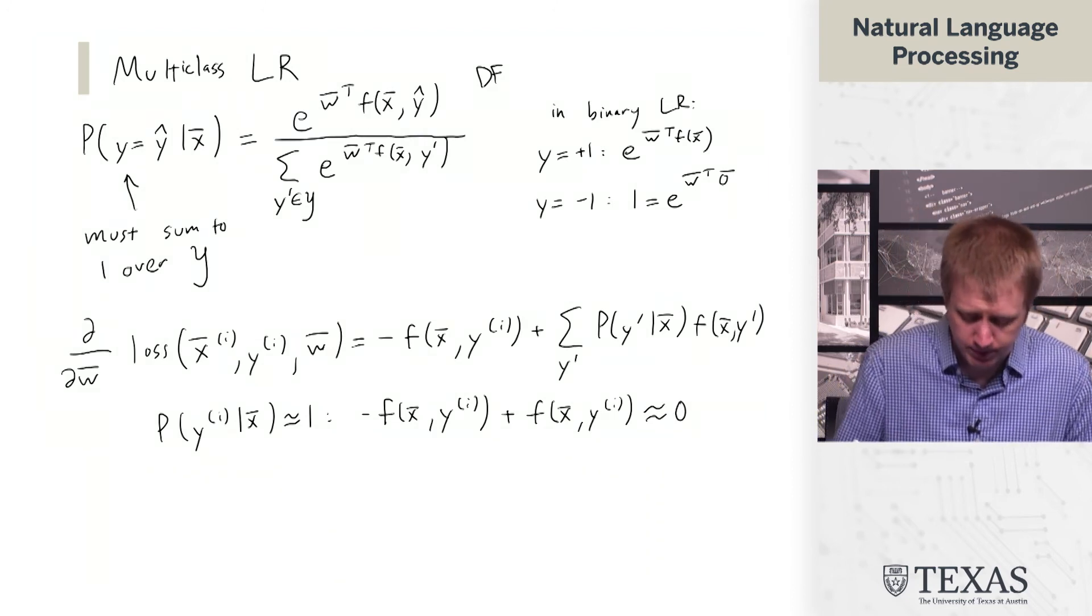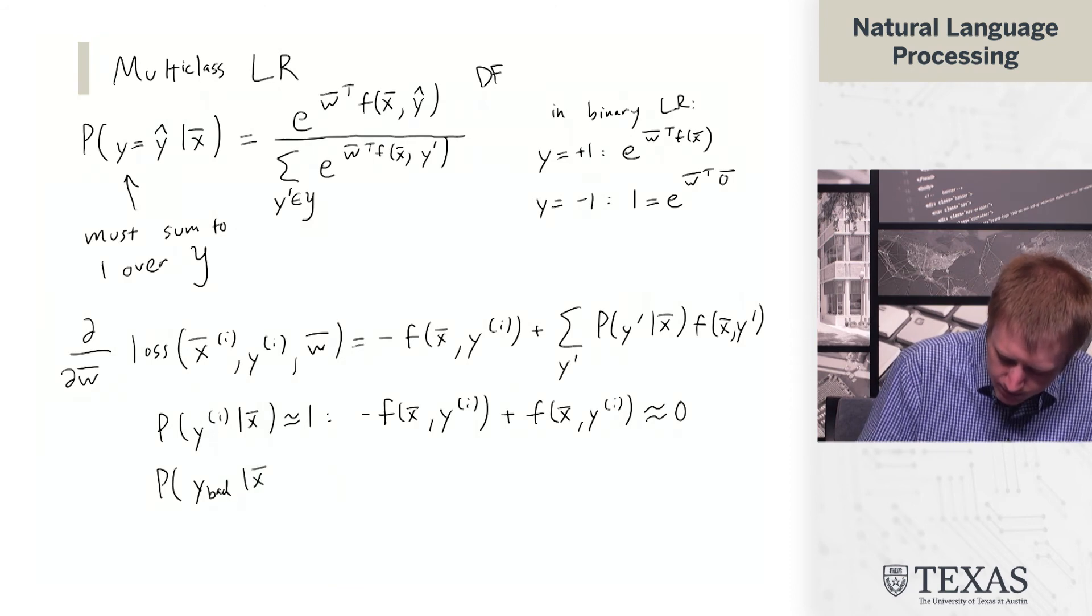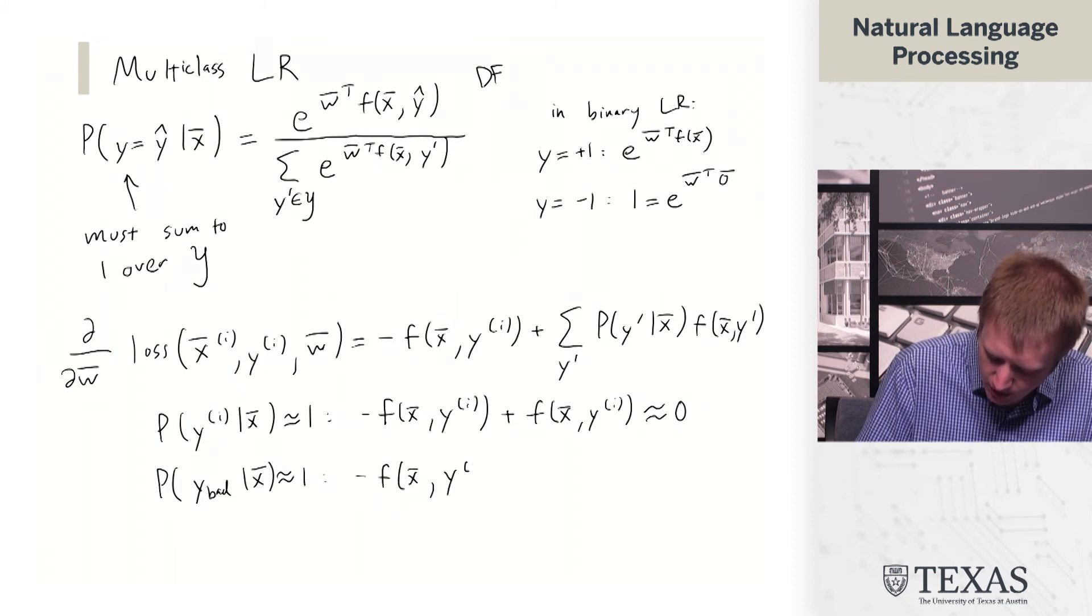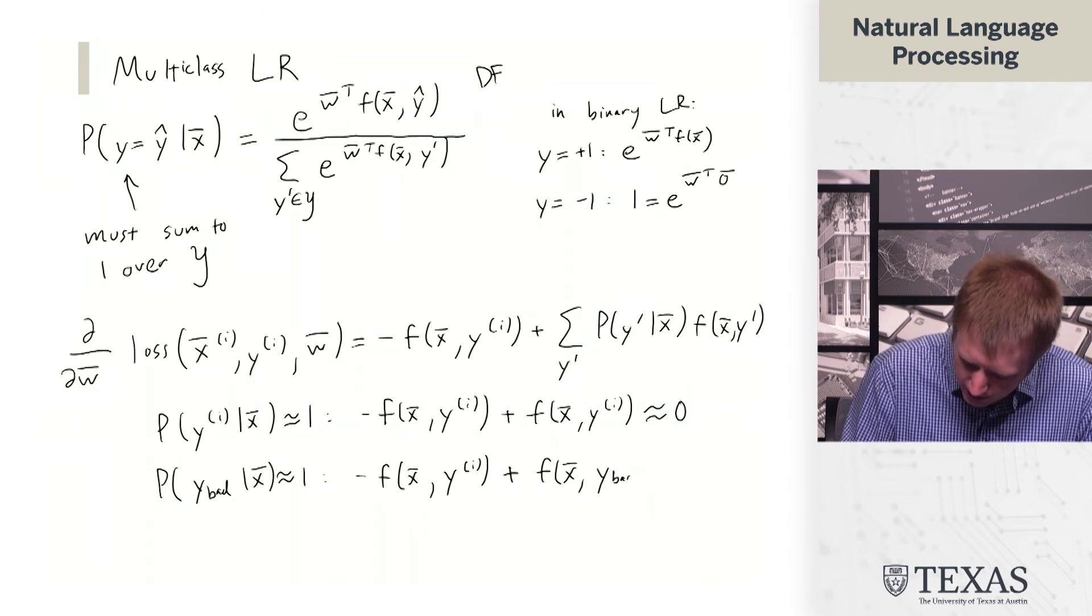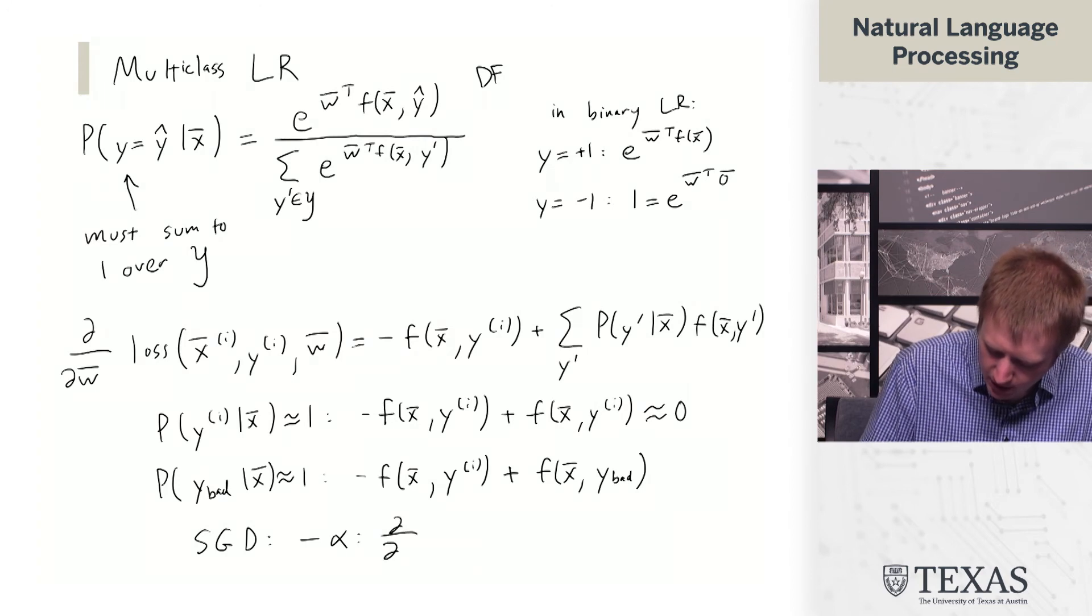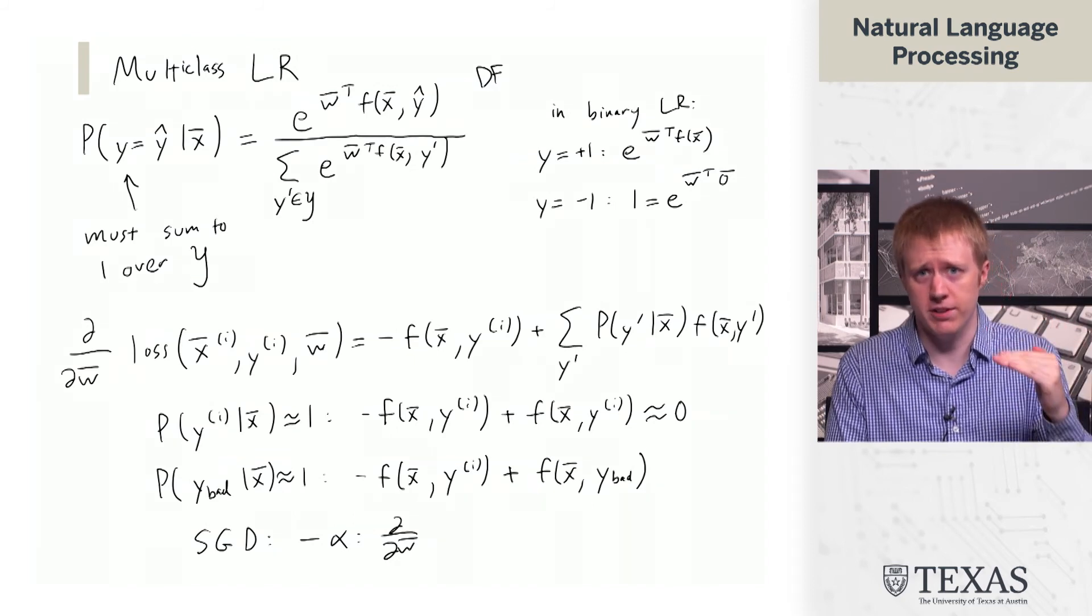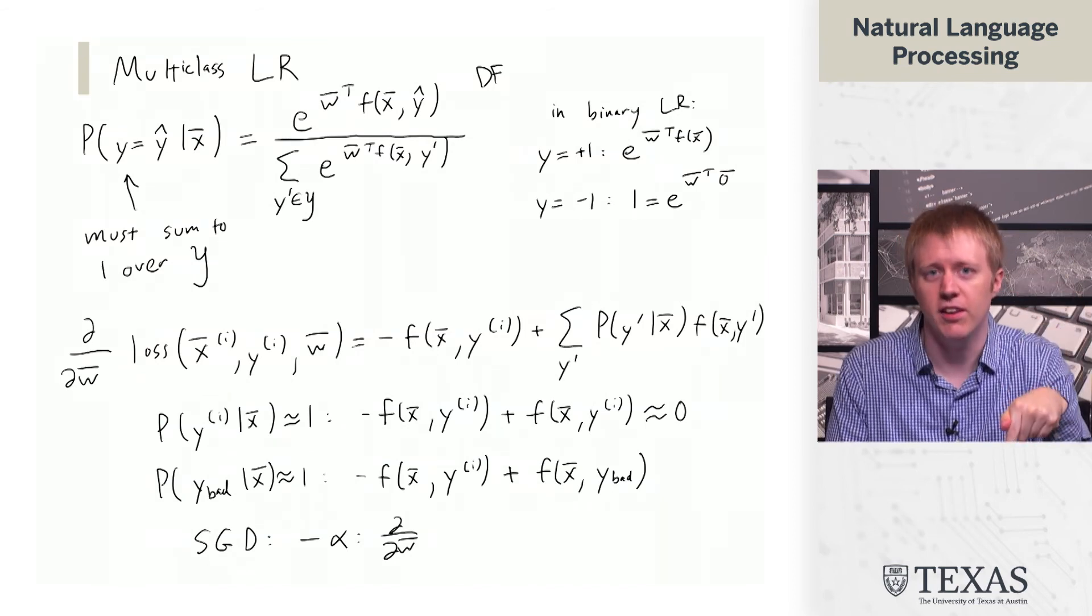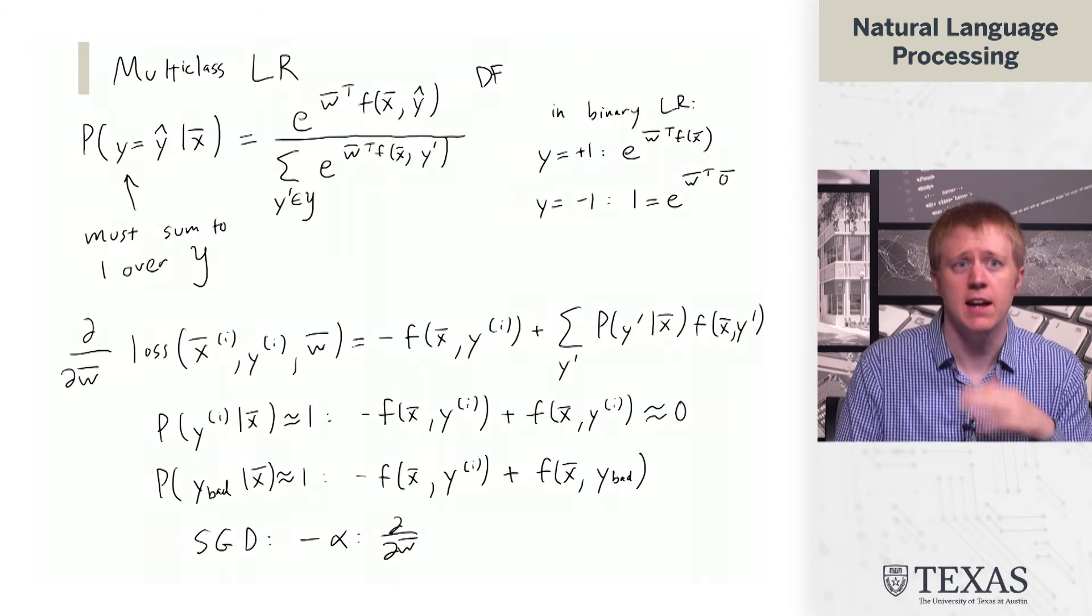We don't make much of a gradient update. If, instead, we have p of, let's say, y bad, then we have minus f of x yi plus f of x y bad here. And then remember that in SGD, we subtract off alpha times the gradient. And if you kind of unpack what's going on here, it turns out we're going to subtract alpha times the features of x comma y bad, which looks like in multiclass perceptron, again, kind of kicking down the value of y bad, the weights associated with y bad. And then we're going to add alpha times f of x yi. That's boosting the correct thing.